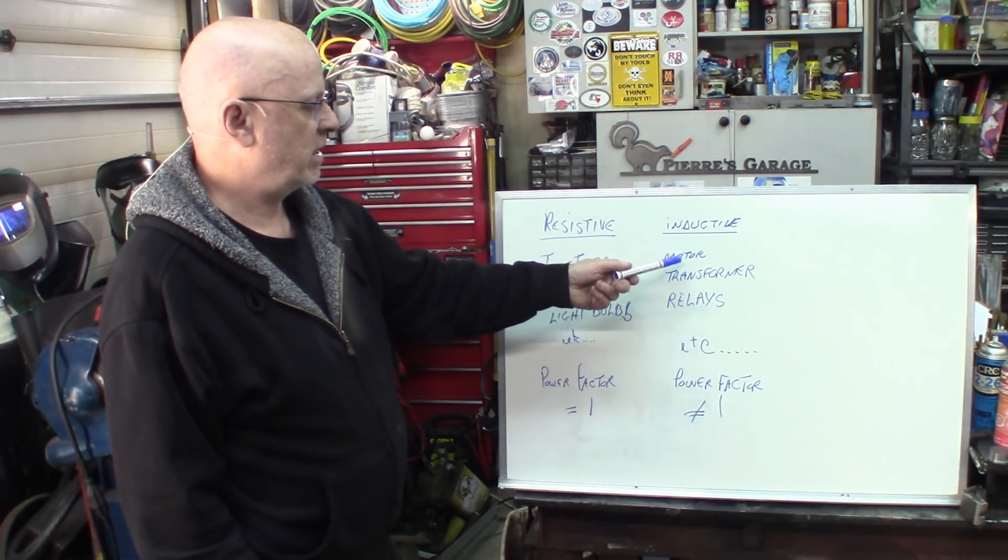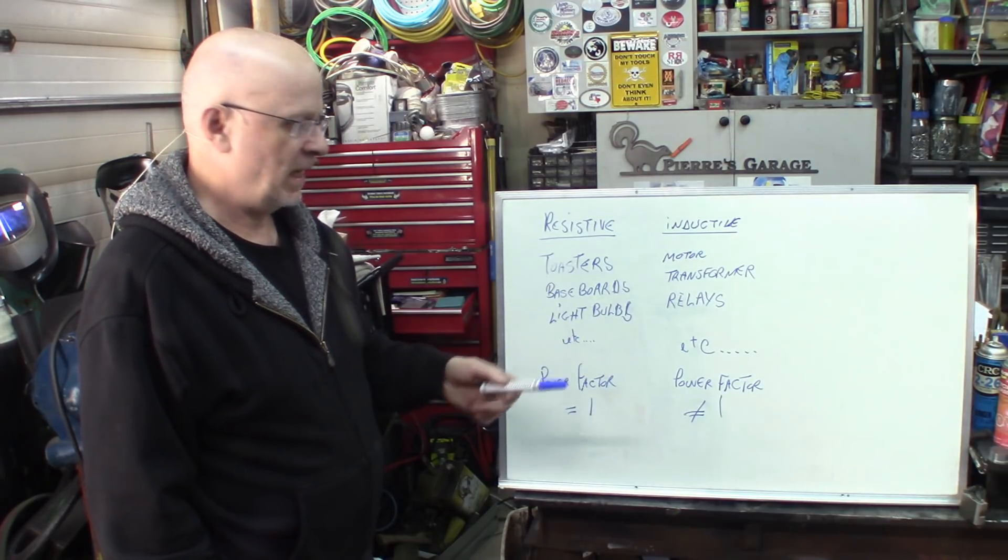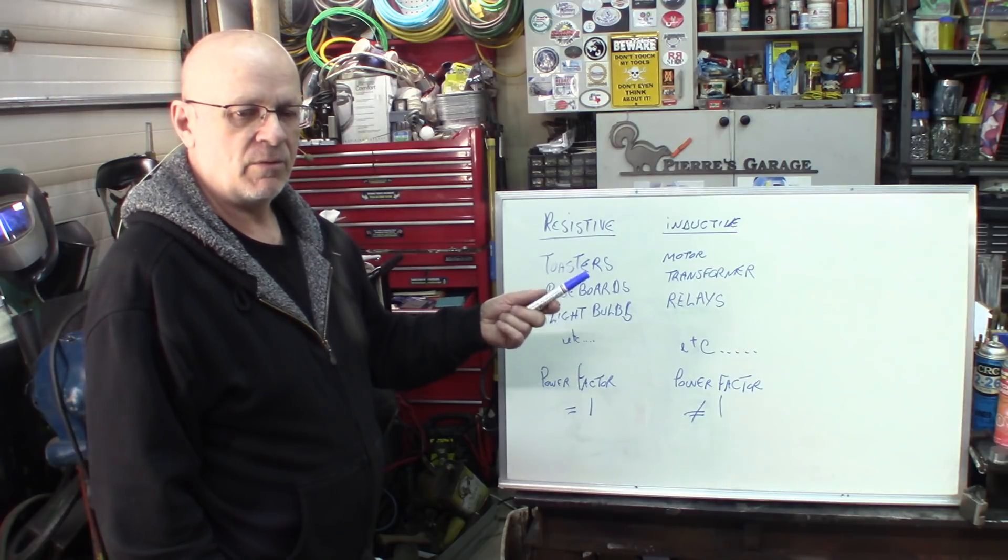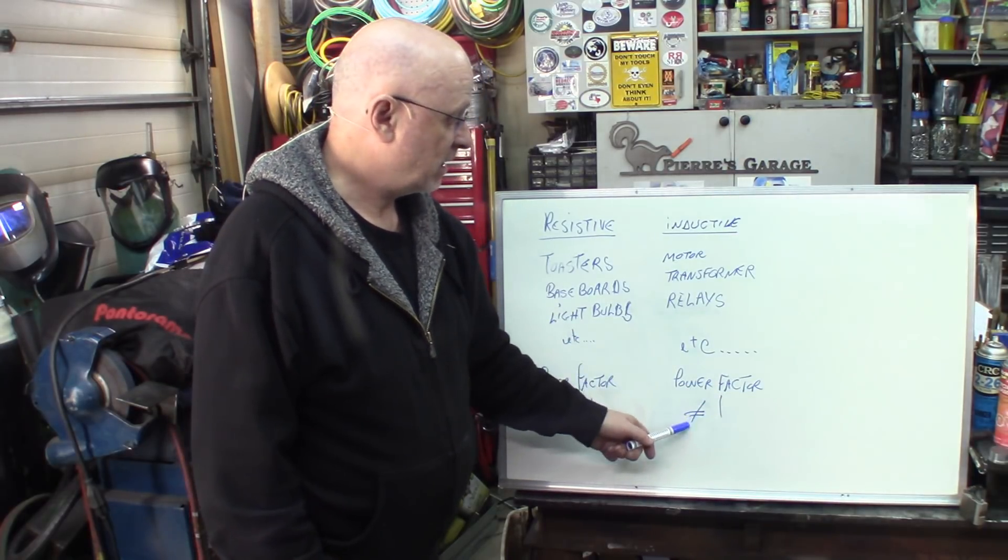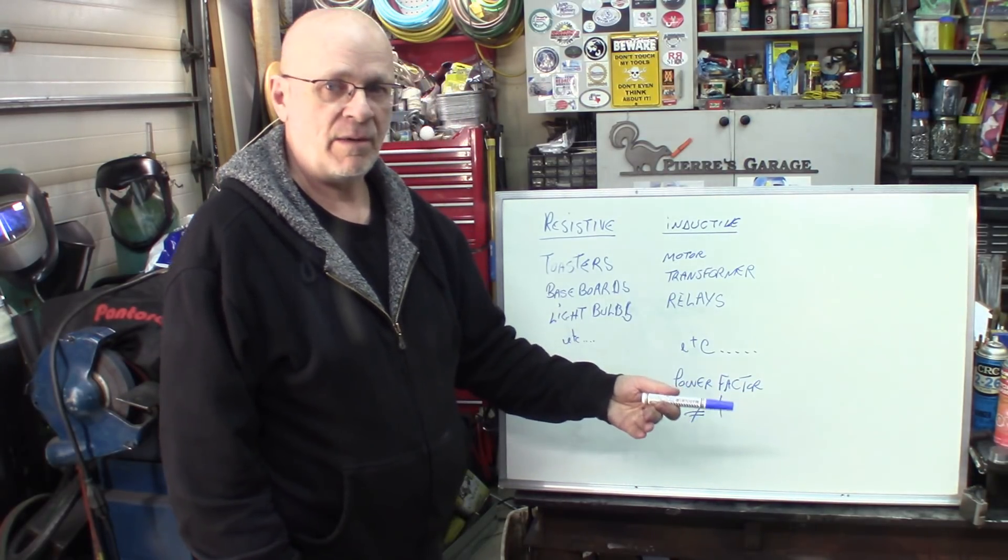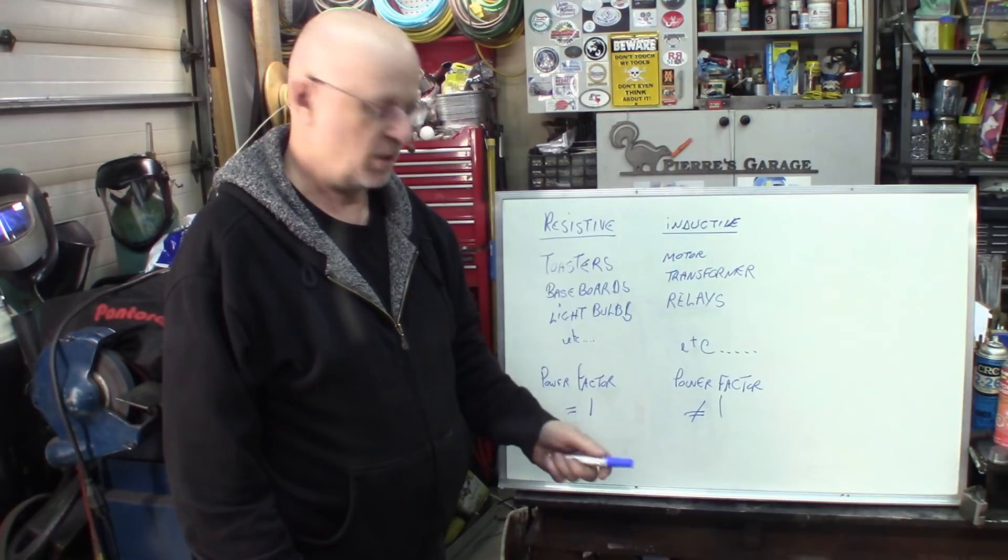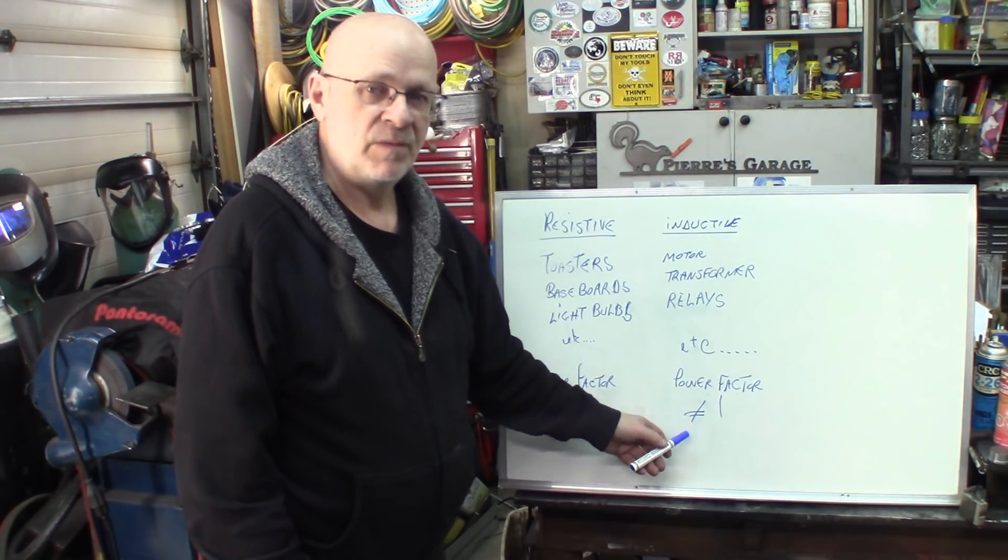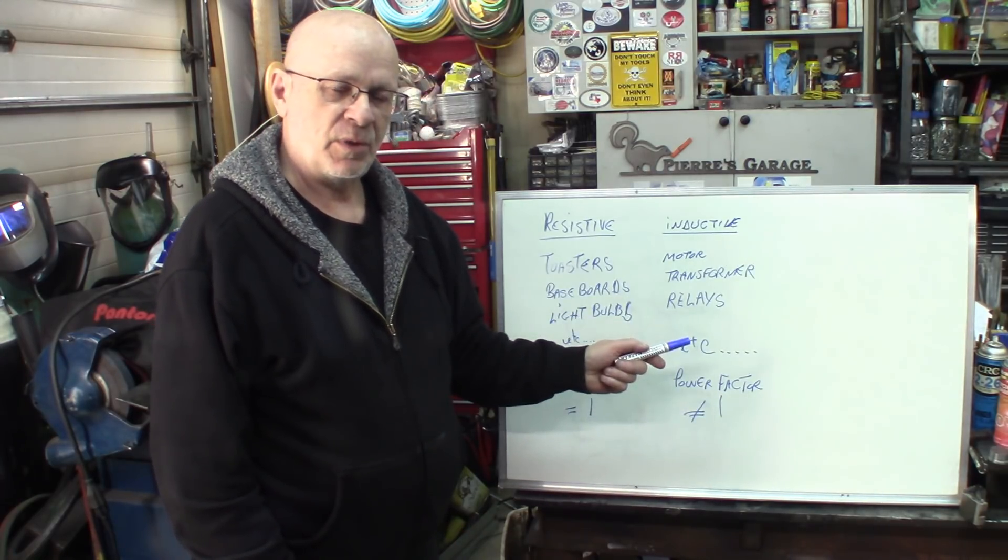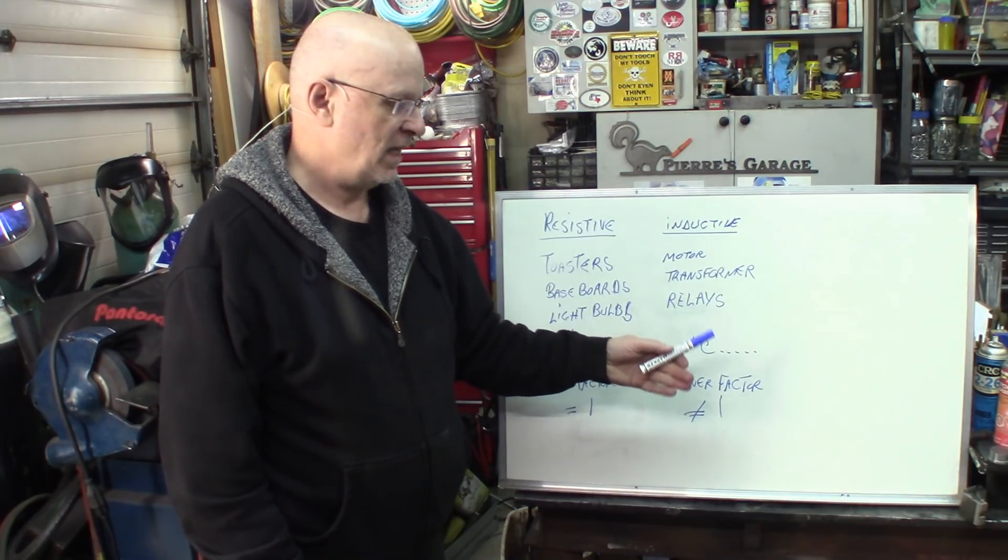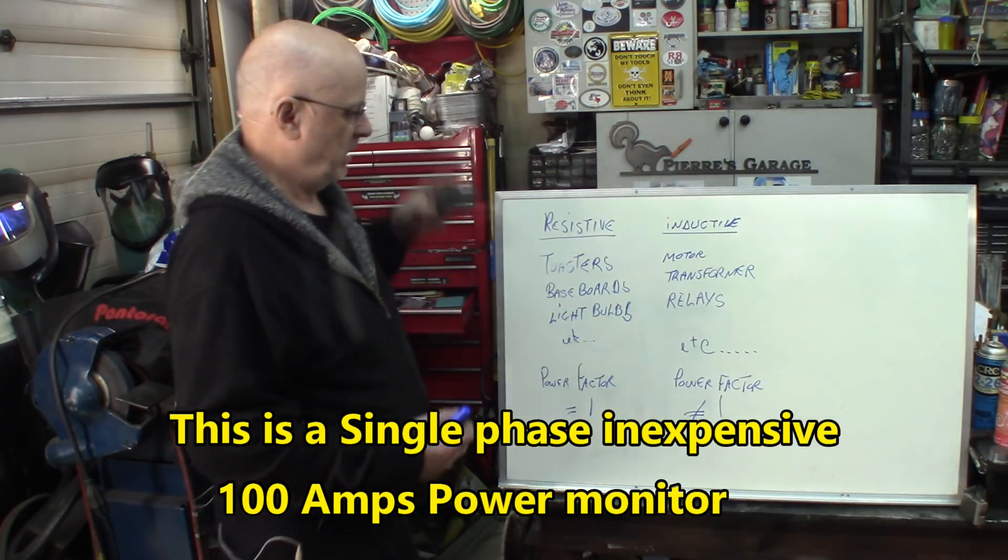As inductive loads, you consider motors, transformers, relays, most stuff made with wire windings. Even a welder, the older type welder made with big transformers, they're pretty much inductive. So the power factor will be different from one. You don't have a definite number on this. It's according to the inductance of the load and how much current has been drawn. So this will be varying from near zero to near one depending upon the combination. So it's pretty hard to really have calculations made about that just out of the blue. This is why we're going to be using this unit here.